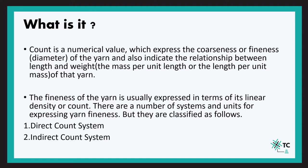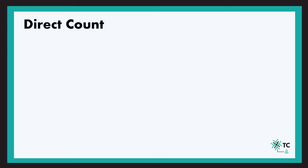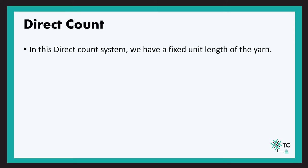Let us start with the first one, that is the direct counting system. Listen very carefully: in direct count, we keep the length of the yarn fixed and the varying weight determines the count, in units like tex and denier.